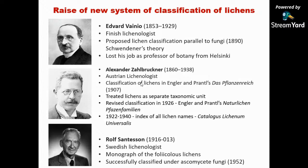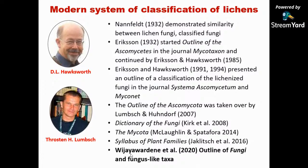Zahlbruckner classified lichens as a separate entity and wrote about 10 volumes of catalogs of lichens of the world — the Zahlbruckner catalog, which was very popular. Only in the 1960s did Rolf Santesson, a Swedish lichenologist, make the bold step of classifying lichens under fungi. He was working on foliicolous lichens — lichens which grow on leaves. After that, with the development of molecular tools, people are now convinced that lichens are fungi.